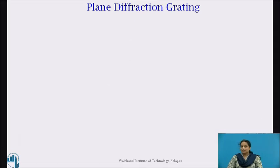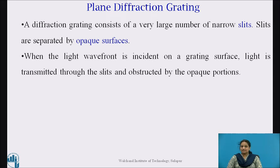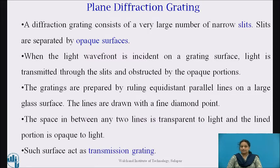Let us now understand what is plain diffraction grating and how it is prepared. A diffraction grating consists of a very large number of narrow slits. When the light wavefront is incident on a grating surface, the light is transmitted through the slits and obstructed by the opaque portions. The gratings are prepared by ruling equidistant parallel lines on a large glass surface. These lines are drawn with a fine diamond point.